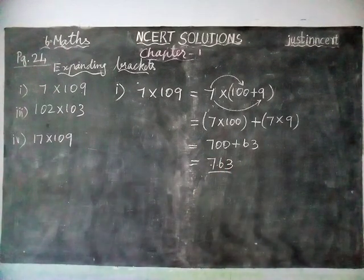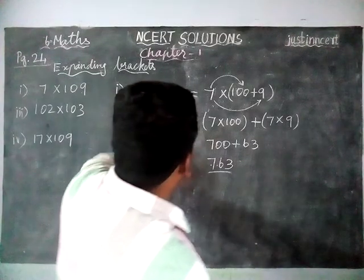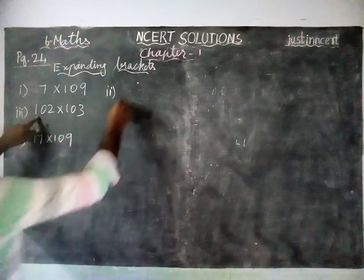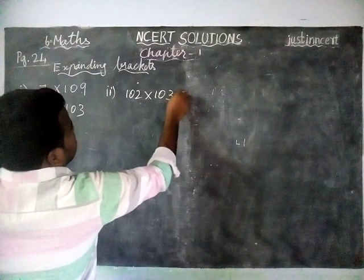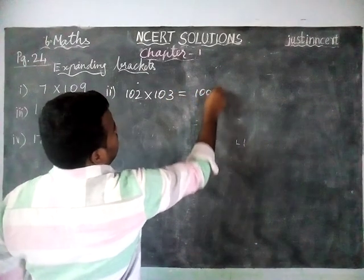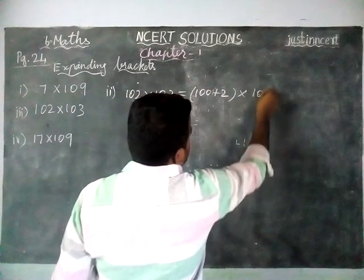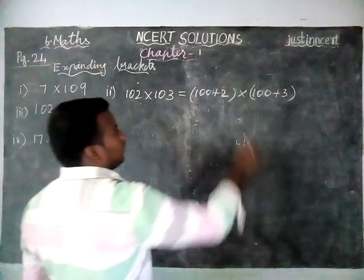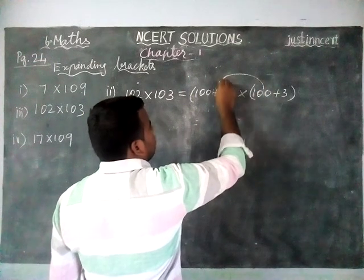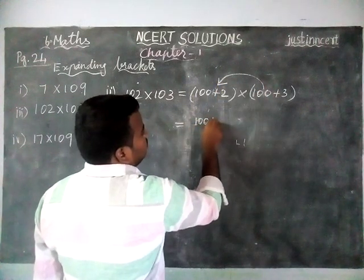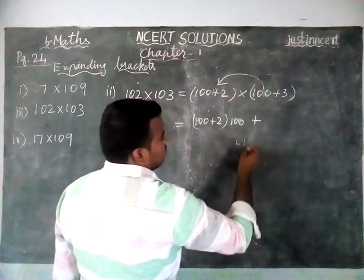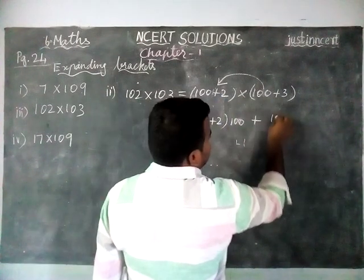Second question: 102 × 103. This is also the same approach — we write it as (100 + 2) × (100 + 3). Listen carefully: now we are going to multiply this whole bracket by 100, so (100 + 2) × 100, plus (100 + 2) × 3.